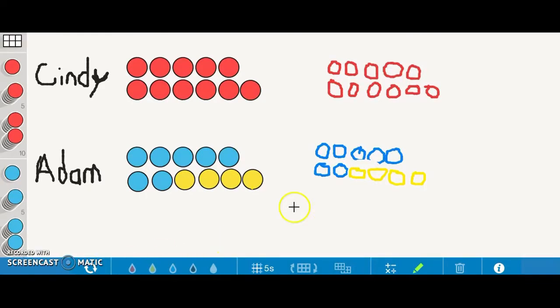Lastly, we will display the abstract representation. We will use the number bond strategy to compare the difference that is unknown. This strategy is where we have two parts and one whole. Two parts will equal the whole.